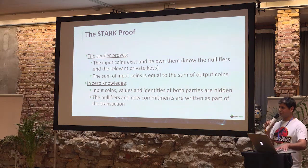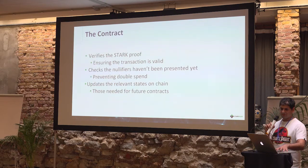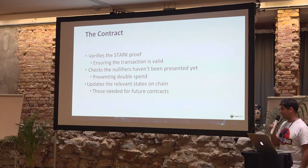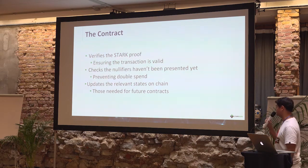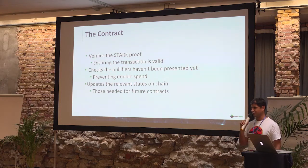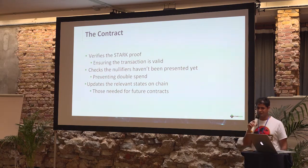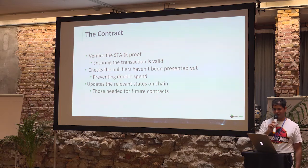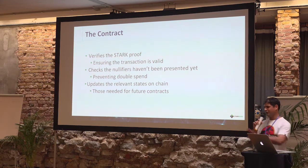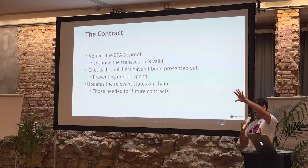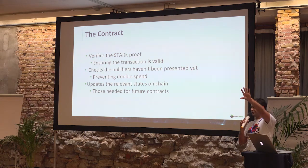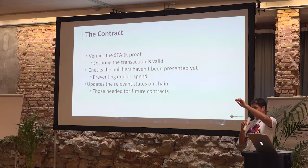The contract needs to verify that the proof of the shielded transaction is valid. You can think about it as an on-chain contract function that calls validate — it needs to get proofs and data and validate that the proofs are correct when run on the data.